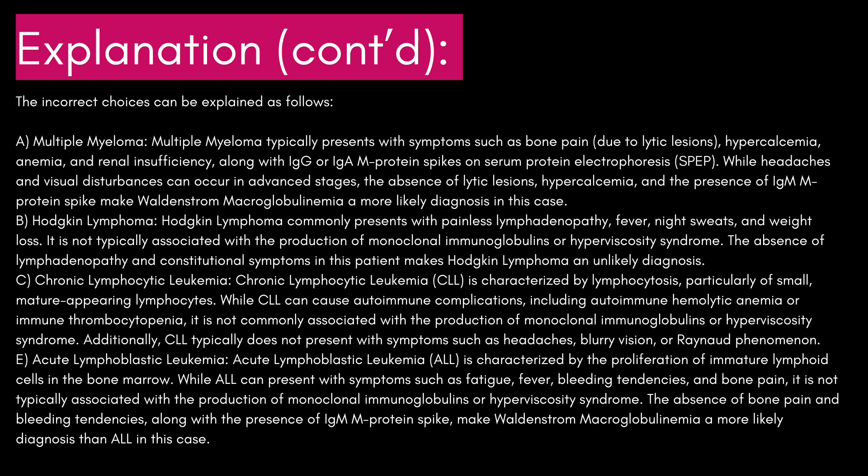E, acute lymphoblastic leukemia, ALL, is characterized by the proliferation of immature lymphoid cells in the bone marrow. While ALL can present with symptoms such as fatigue, fever, bleeding tendencies, and bone pain, it is not typically associated with the production of monoclonal immunoglobulins or hyperviscosity syndrome. The absence of bone pain and bleeding tendencies, along with the presence of an IgM M-protein spike, make Waldenstrom macroglobulinemia a more likely diagnosis than ALL in this case.